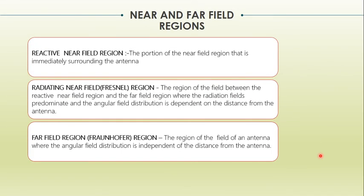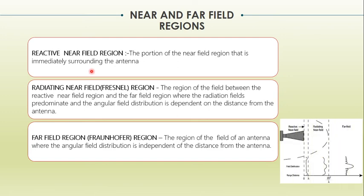The reactive near field region is immediately surrounding the antenna where it is highly reactive, and the reactive component Jx is very predominant. In the radiating near field region, the E field and H field try to become orthogonal to each other, and the field distribution depends on the distance from the antenna — the shape and nature of radiation vary with distance. Once we cross the near field region we reach the far field region where the distribution of the fields is independent of the distance, and after this we acquire the required radiation pattern.